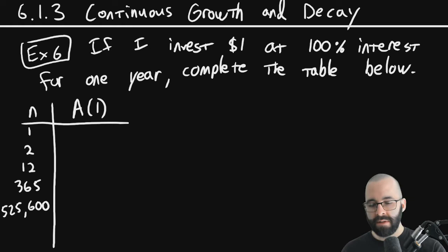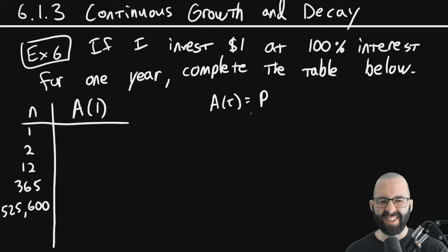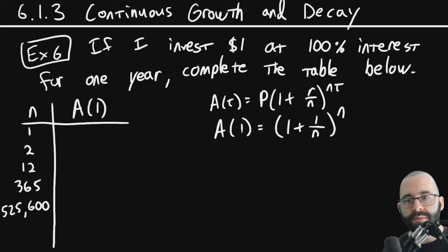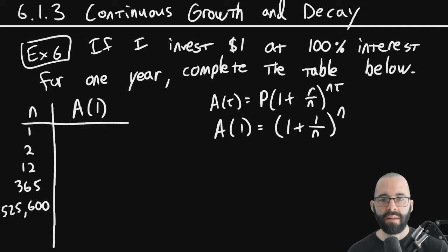So remember that A(t) is P, principle. 1 times (1 + r/n)^(nt). So specifically, our A(1), that's going to be our principle is $1. 1 plus r. Our rate is 100%, which is 1, over n to the n times t, which is also 1. So this is what we're looking at. We just have to plug in different values of n.